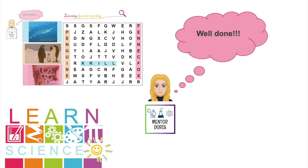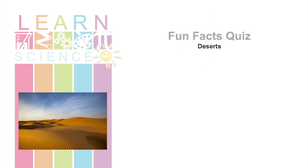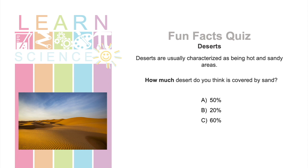Let's move on to our last fun facts quiz which will be about deserts. Deserts are usually characterized as being hot, sandy and barren places. But how much desert do you think is covered by sand? Is it a) 50%? b) 20%? or c) 60%? That's right, the answer is b. Only 20% of all deserts are covered by sand.